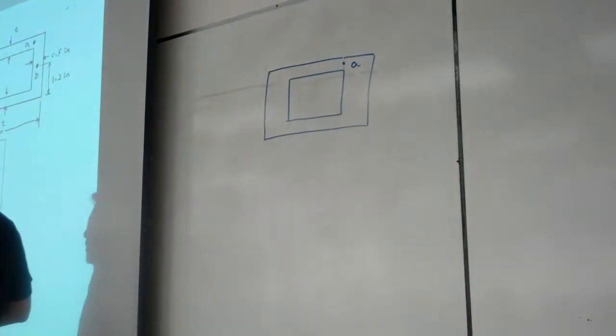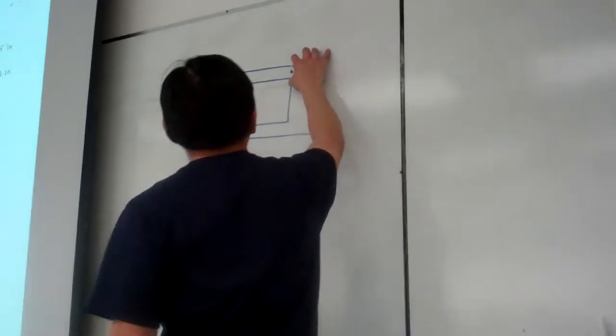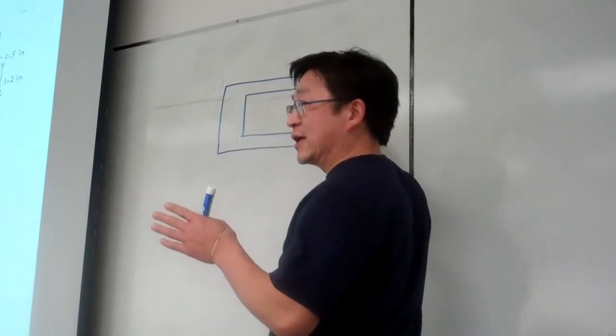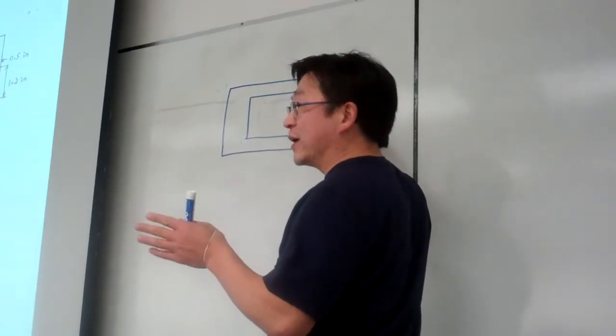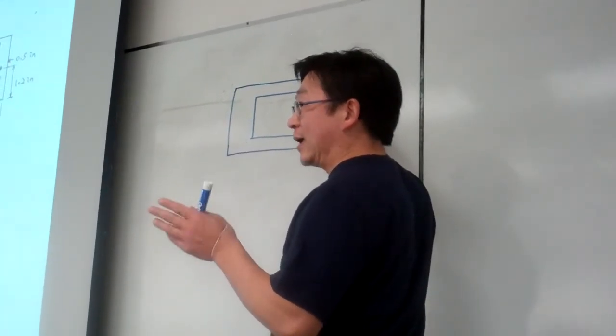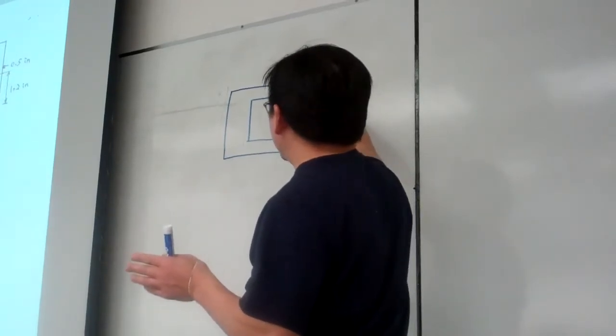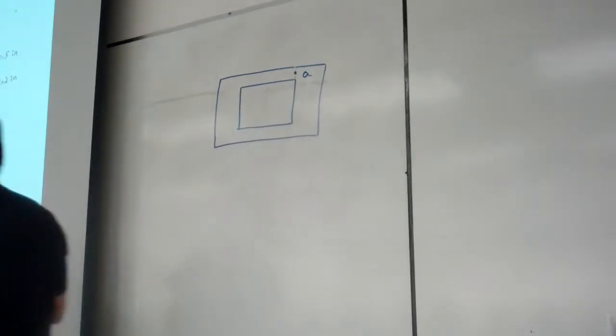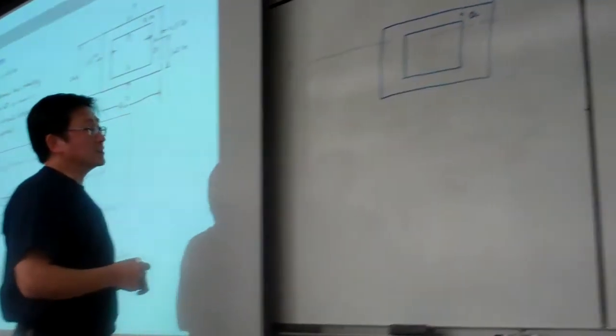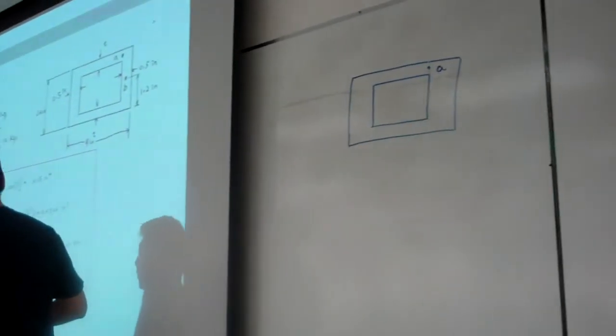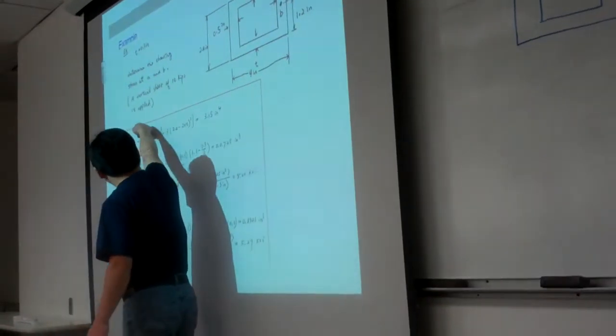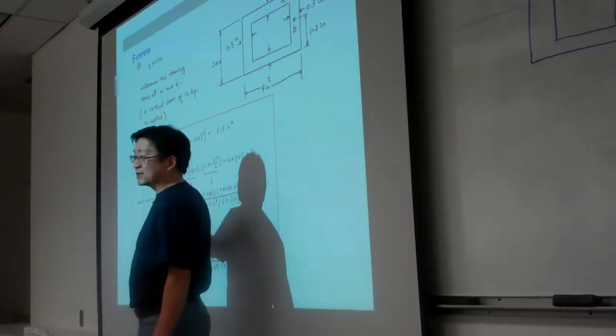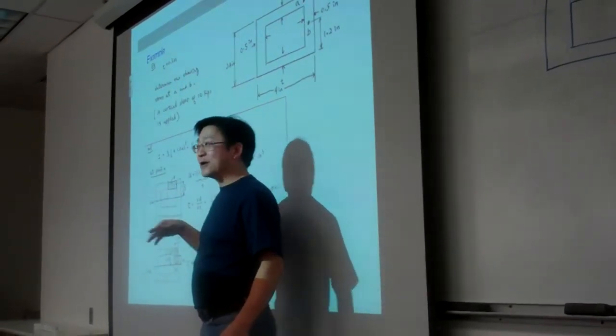So for this case, we can utilize, again, this cut won't give us, won't allow us to bisect the whole entire cross section. In this way, we have to make another additional cut to make a bisection to calculate for capital Q. So my strategy is this.